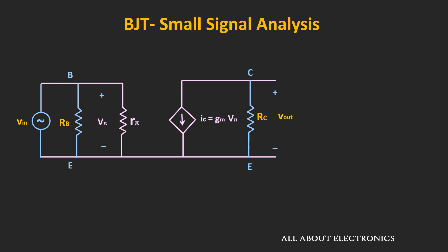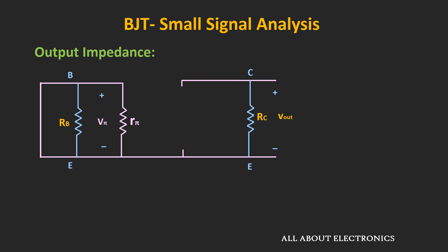Now let's find the output impedance, which is the Thevenin's equivalent impedance seen through the output terminal. To find it, we consider all independent sources in the circuit as zero — we replace input voltage Vin with a short circuit. As soon as Vin becomes zero, the resistors get short circuited and the collector current Ic also becomes zero because Vπ becomes zero. The dependent current source acts as an open circuit, so the Thevenin's equivalent resistance seen through the output terminal is equal to Rc. The output impedance is therefore equal to Rc.